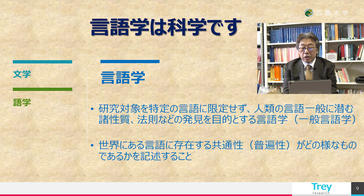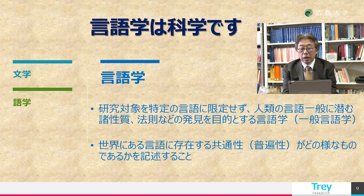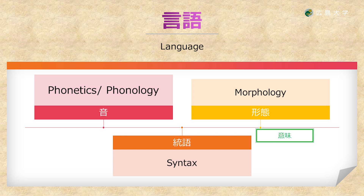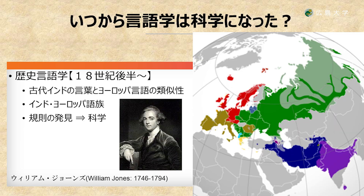また語学というのは言語学と混同されやすいのですが、ある外国語の運用能力を高める分野であって、決して一定の原理や法則を見つけるものではありません。このような文学や語学と違って言語学は研究対象を特定の言語に限定せず、人類の言語一般に潜む諸性質・法則などの発見を目的とするものであり、これを一般言語学と言います。また言語学の目的は世界にある言語に存在する共通性、すなわち普遍性がどのようなものであるかを記述することにあるとも言えます。